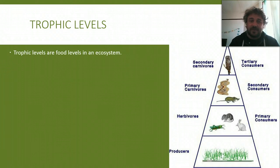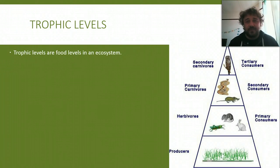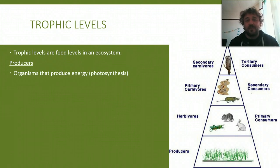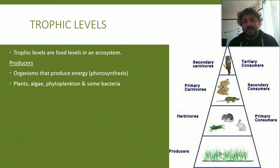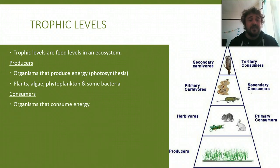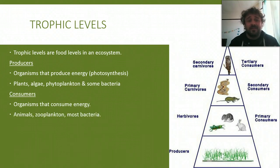Trophic levels are the food levels in an ecosystem — we're doing a bit of revision here. You've got your producers, which are the organisms that produce energy through photosynthesis: plants, algae, phytoplankton, and some bacteria. Consumers are organisms that consume energy — animals, zooplankton, most bacteria.